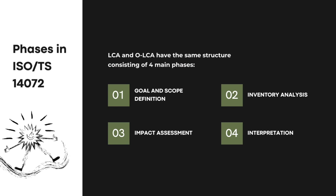How do you implement OLCA? LCA and OLCA methodologies are based on the same principles and life cycle thinking framework. The main difference is the object of analysis — respectively a product, or the activities associated with the organization as a whole or a portion thereof. That means the two methodologies have the same structure, consisting of four main phases: first, goal and scope definition; second, inventory analysis; third, impact assessment; and fourth, interpretation.